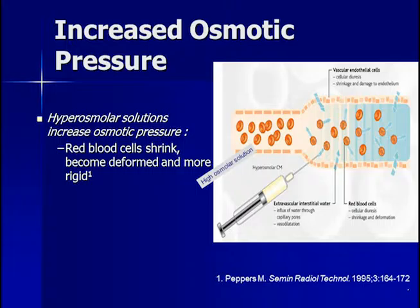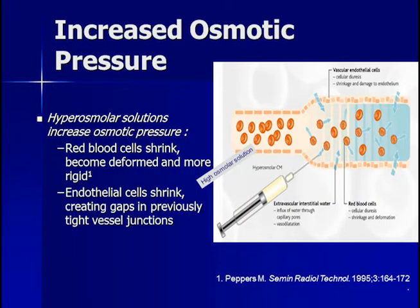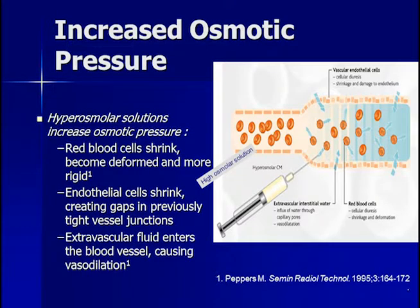When a hyperosmolar solution is injected into the bloodstream, red blood cells shrink, become deformed, and more rigid. Endothelial cells surrounding the vessels also shrink, creating gaps in previously tight vessel junctions. This leads to fluid entering from the extravascular space into the blood vessels, causing vasodilation. As a result of these issues with high osmolar solutions, less osmolar solutions have been developed.